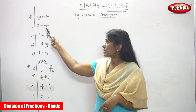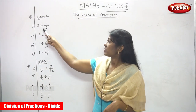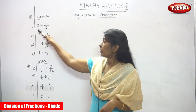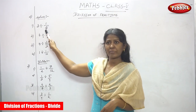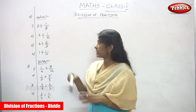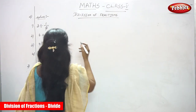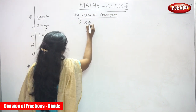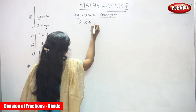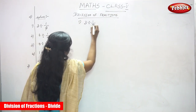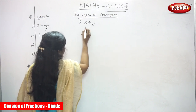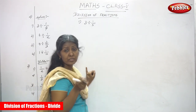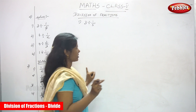Now we are going to solve the sum 3 divided by 1 by 5. This is a whole number and this is a fraction. 3 is a whole number and 1 by 5 is a proper fraction.